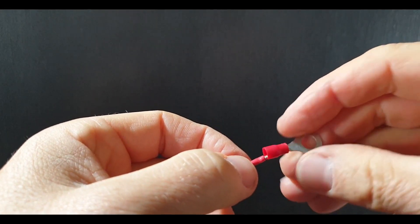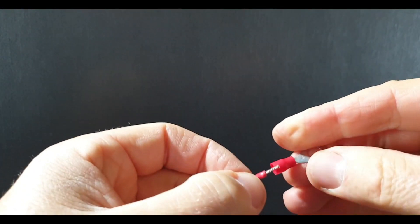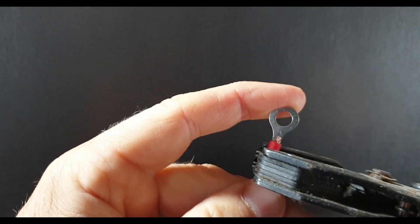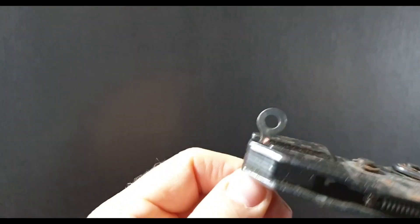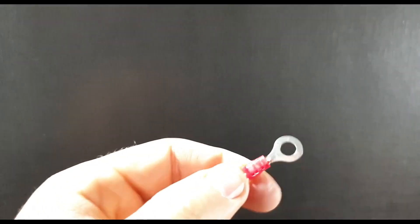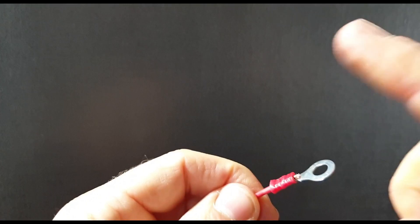It will prevent the nut or whatever we're screwing that ring terminal onto sitting nice and flush. So give that a twist, put the cable in, and then we're just going to crimp it as normal. So we take our crimps, crimp that.